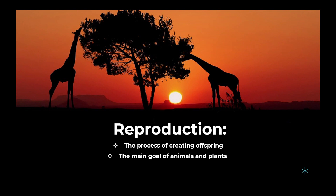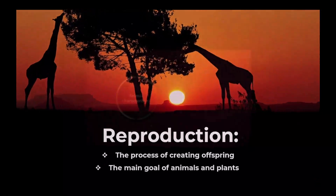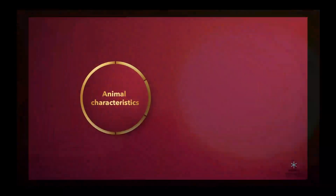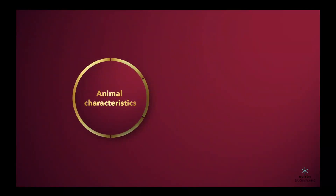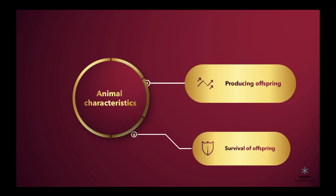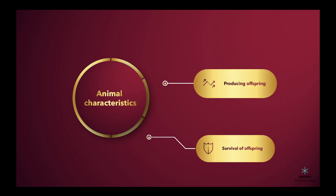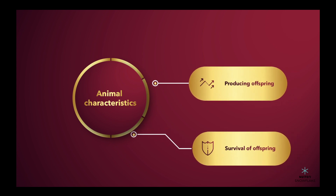Let's explore how characteristic animal behaviors and specialized plant structures play a big role in the probability of successful reproduction. We will begin by examining different animal characteristics. These characteristics can be separated into two categories: producing offspring and survival of offspring.